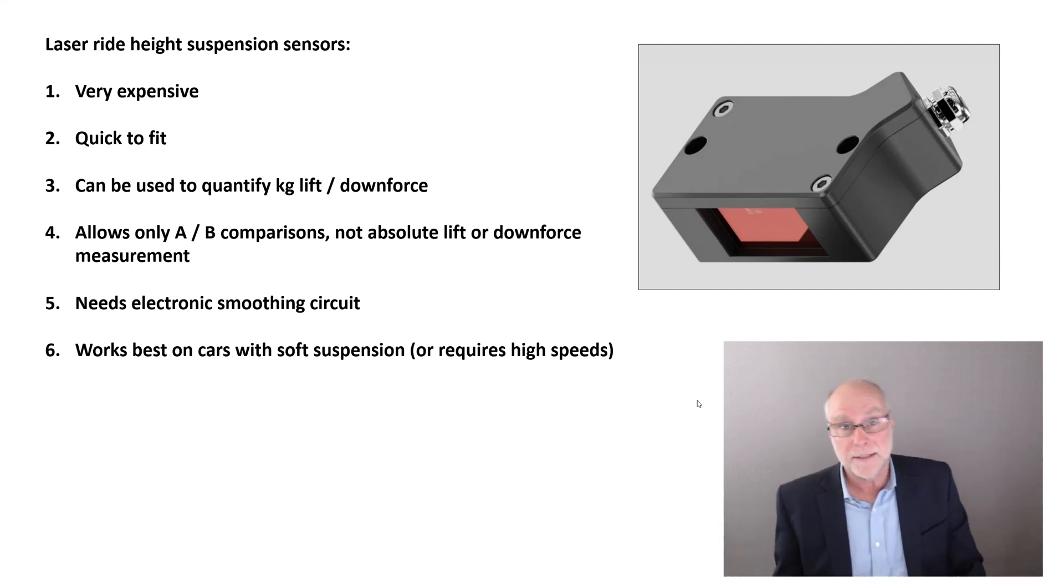So the sensor's expensive. However, it's quick to fit. You basically make a bracket, suction cap it to the side of the car with a good quality suction cap. You don't want it falling off. Helps if you can adjust its angle. But fitting one of these can take a minute. You can use this to quantify kilograms of lift or downforce, as we did with the ride height sensor. To get over the problem of tires growing, you always do the testing with and without the aerodynamic addition and at the same speed. So you do 100 kilometers an hour and have the wing on. What's the ride height? You take the wing off. You do 100 kilometers an hour. What's the ride height now? So because you're doing an AB comparison of that sort, the tire growth is the same in each case. So it cancels out.